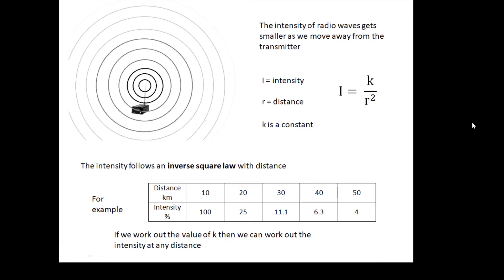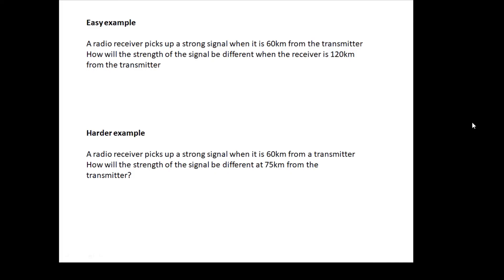We'll do these together. Easy example: a radio receiver picks up a strong signal when it's 60 kilometers away. How will the strength be different at 120 kilometers? If the distance is double, the intensity won't be a half, it will be a quarter. So a quarter intensity, in other words 25 percent of what it was.